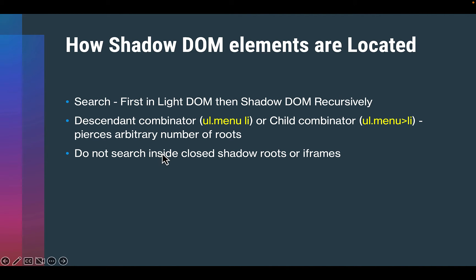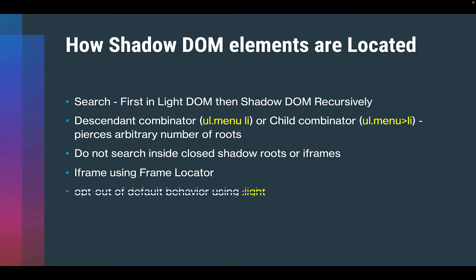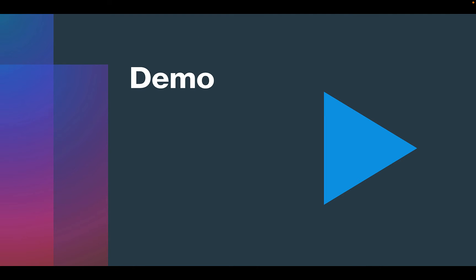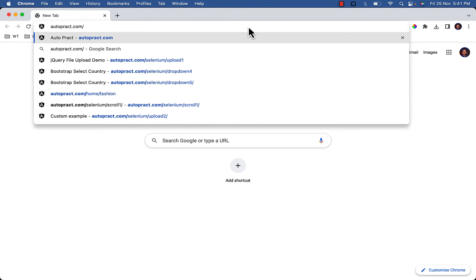CSS or text engines do not search inside closed Shadow roots or iframes. For iframes, you can use the frame locator along with the techniques we will discuss here. You can also opt out of the default behavior and differentiate light DOM elements from Shadow DOM elements using the CSS :light extension or the text:light selector engine. If you use this technique, the engine does not pierce shadow roots. Let's understand this theory with a few examples. To practice, you can visit autoprac.com/selenium/shadow-dom-1.